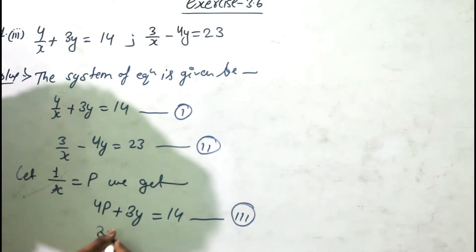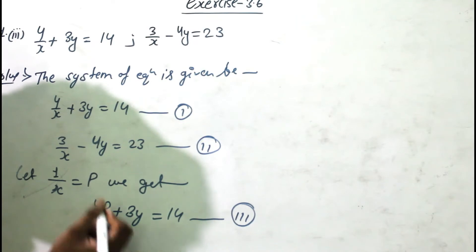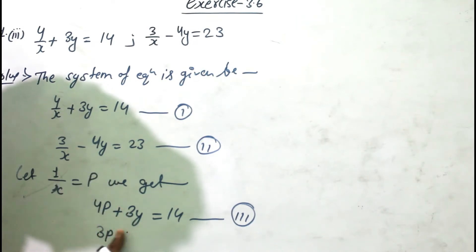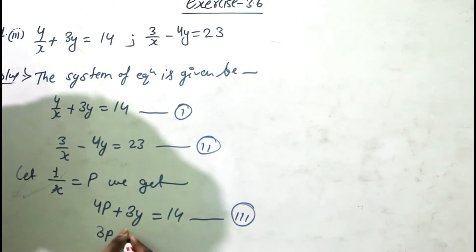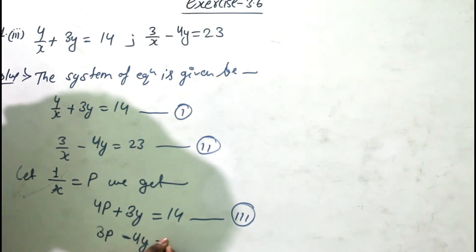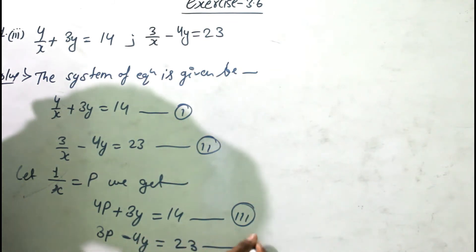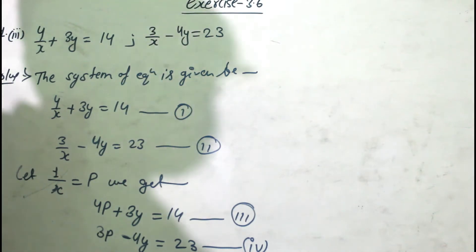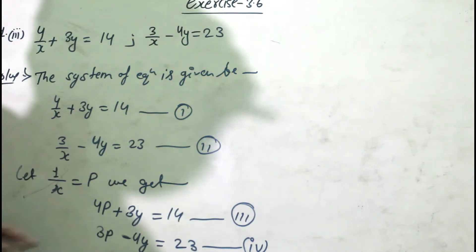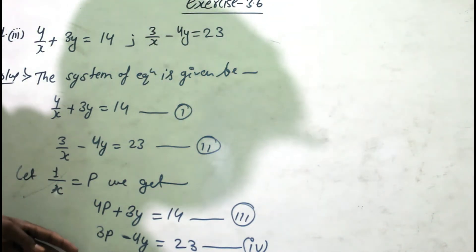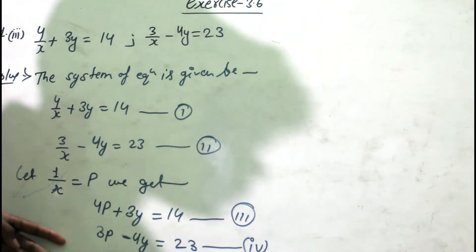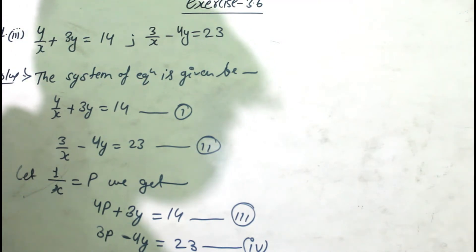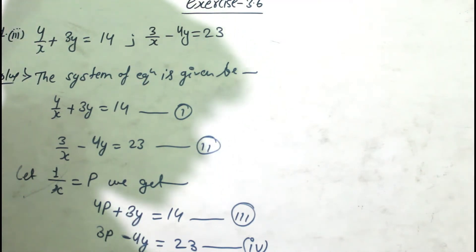And in the second equation, 3/x becomes 3p, so we get 3p - 4y = 23. This is our equation number four. Now let us solve this using the substitution method. If you want to use elimination, you can, but it will be a bit longer.